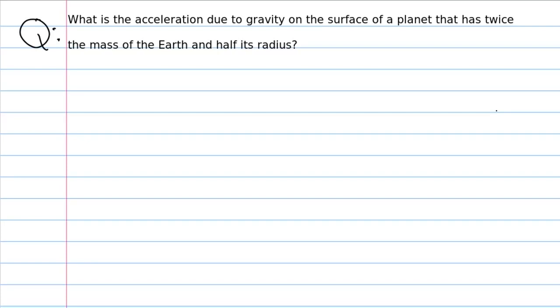The acceleration due to gravity can be found using Newton's law of universal gravitation. Let's consider a planet like this and a person on it. The mass of the person is lowercase m. The mass of the planet, let's use capital M.